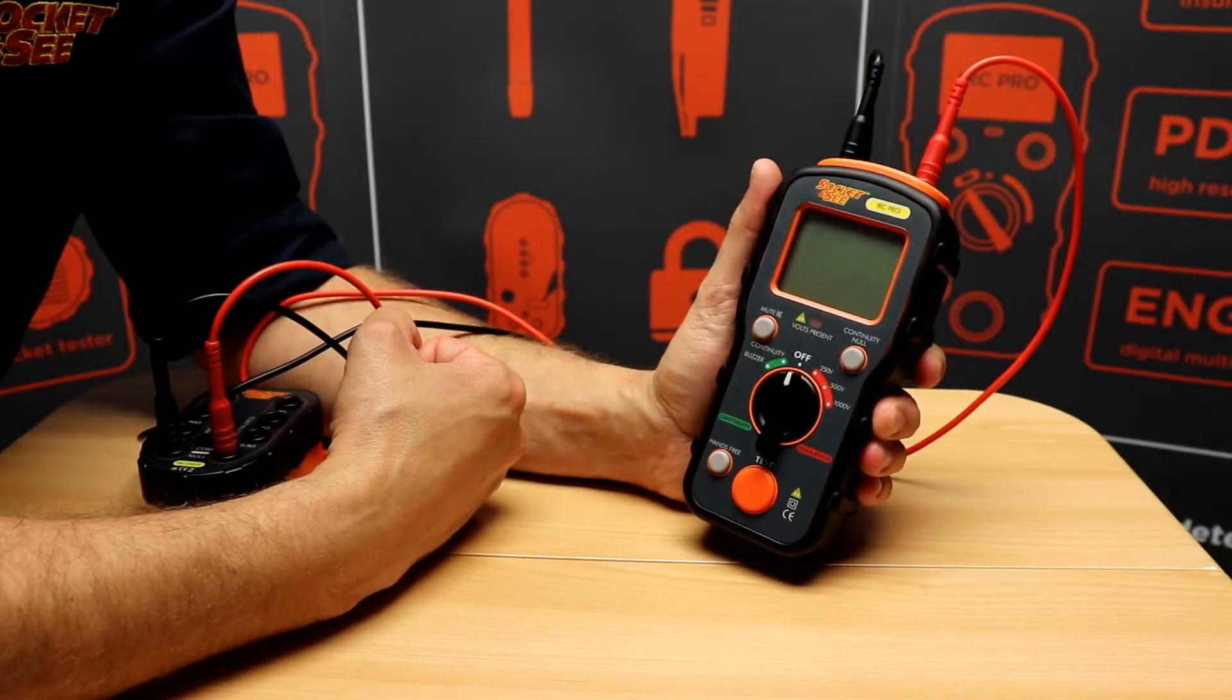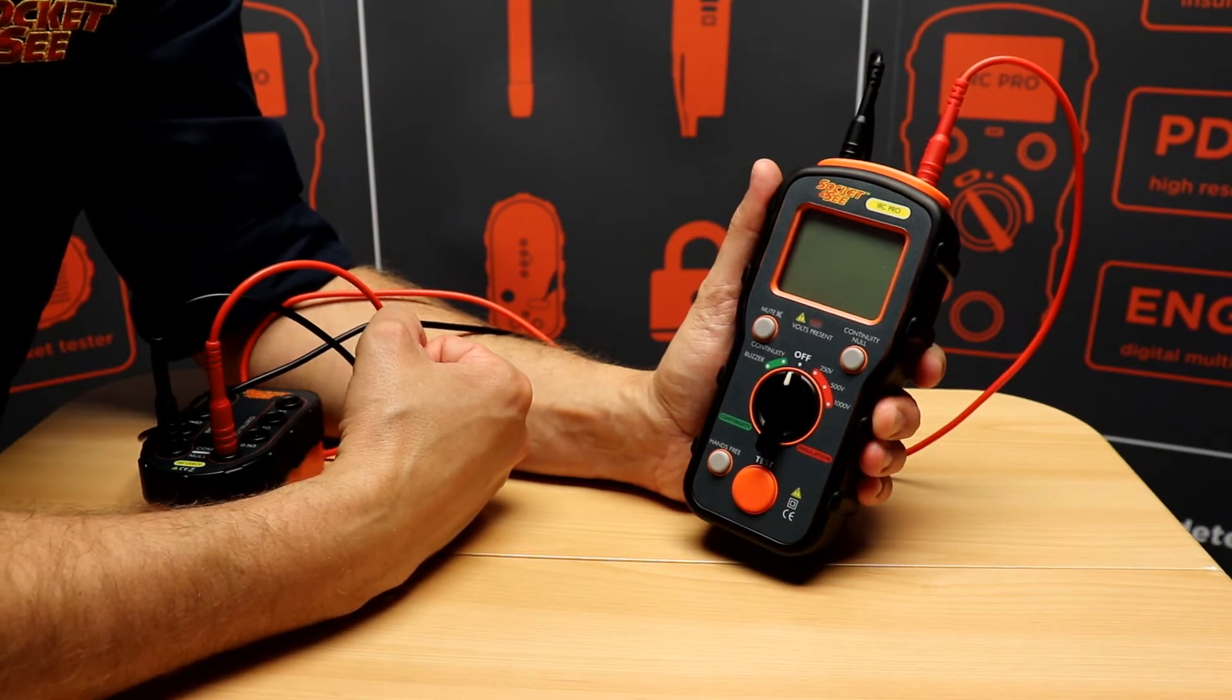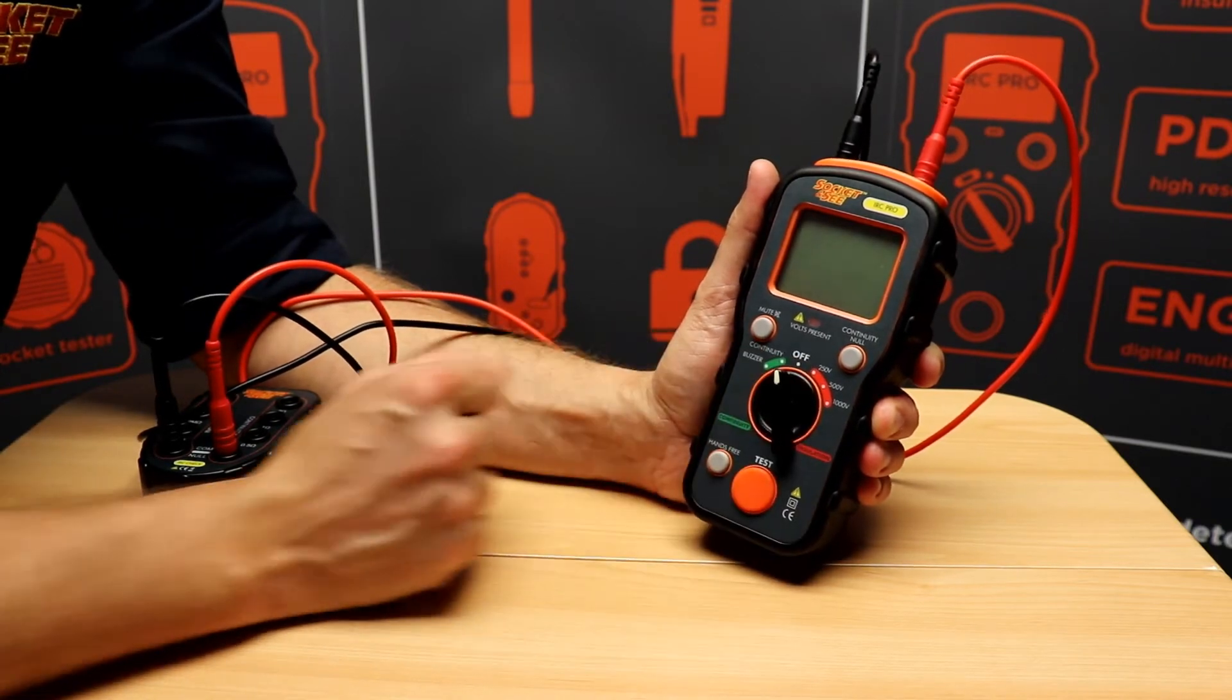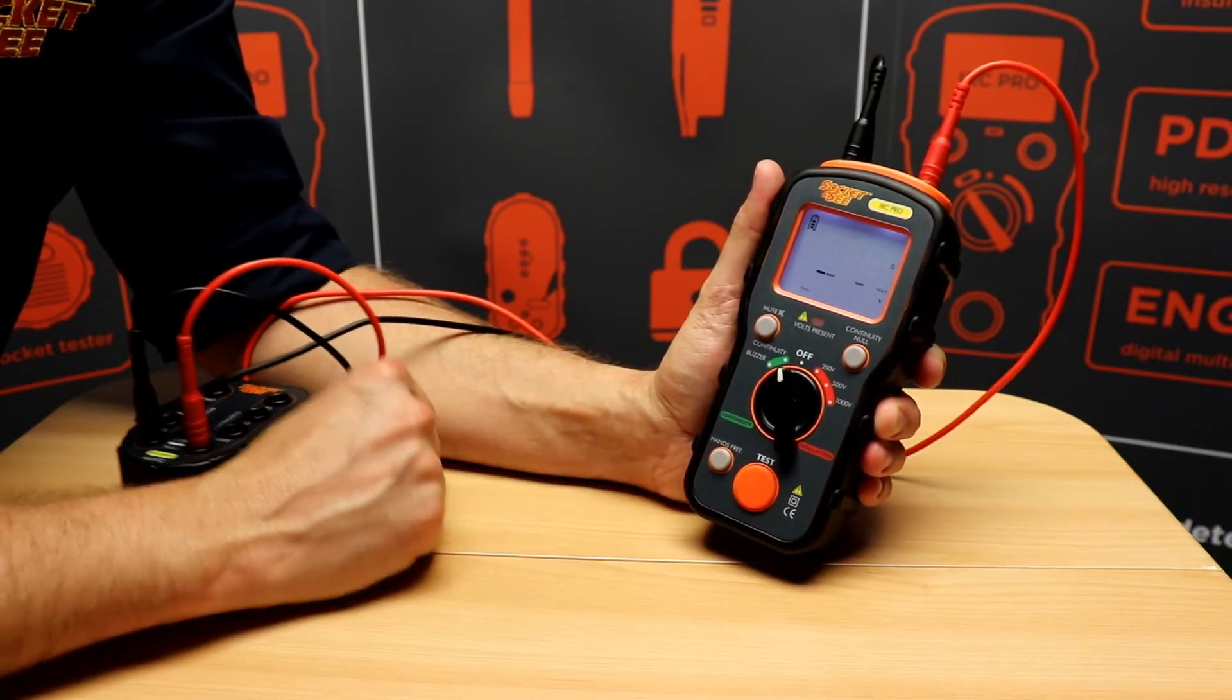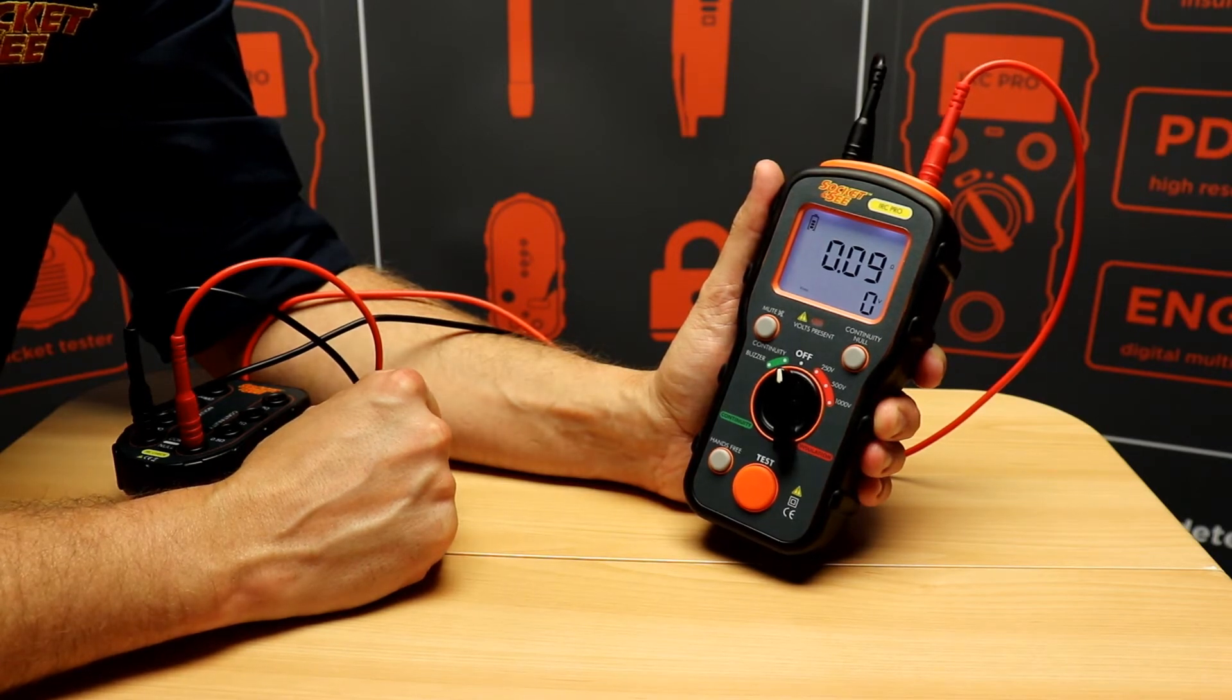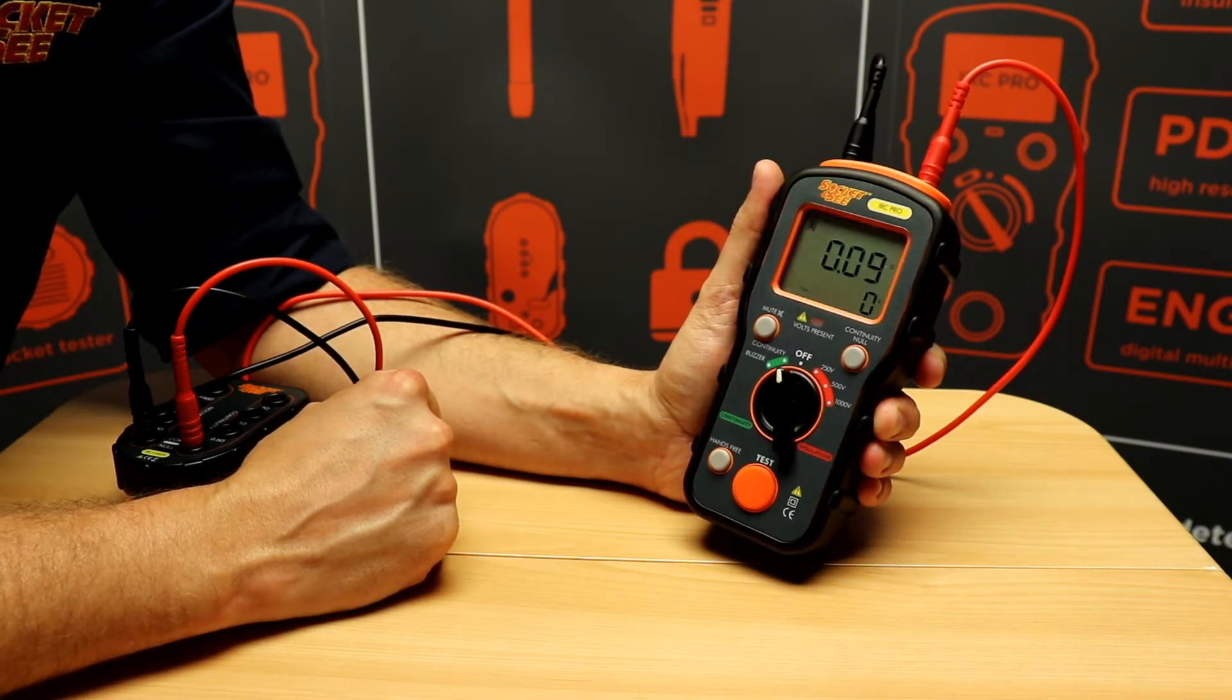We're going to look at the feature set on the Socket&C IRC Pro Insulation and Continuity Tester. Firstly we'll switch to Continuity. We then press Test. We measure 0.09 ohms. That's the resistance of the test leads.